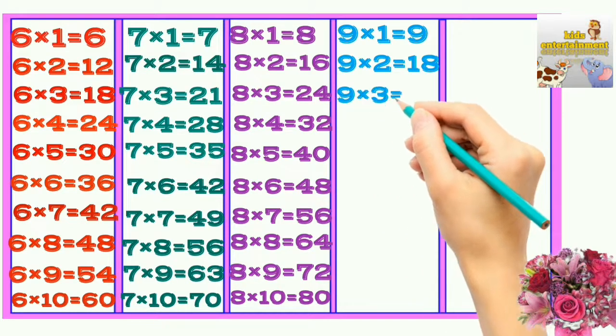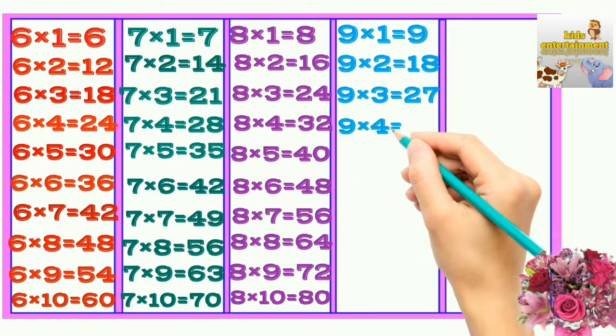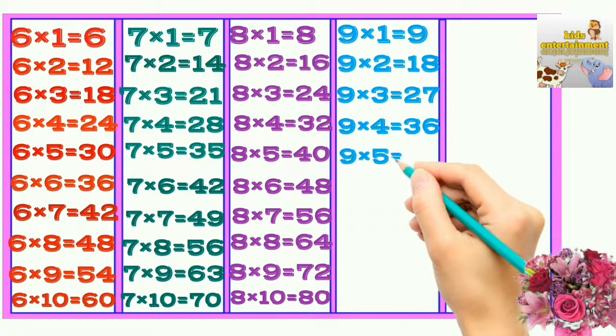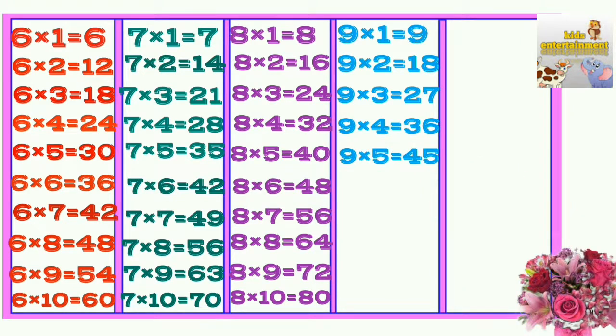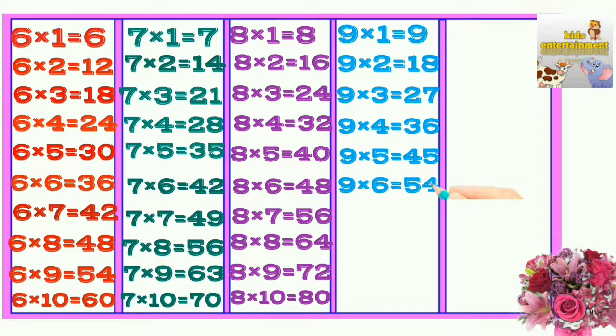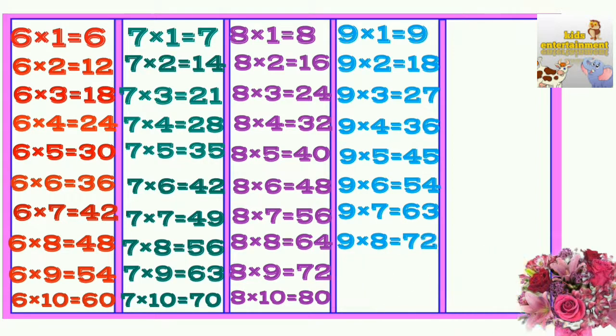9×3=27, 9×4=36, 9×5=45, 9×6=54, 9×7=63, 9×8=72, 9×9=81, 9×10=90.